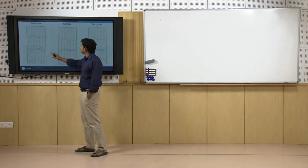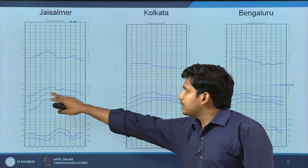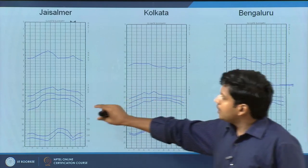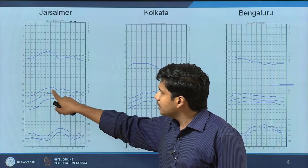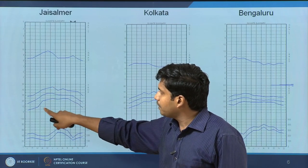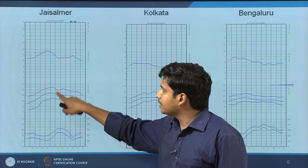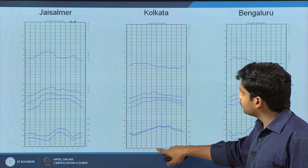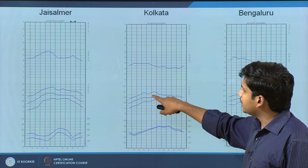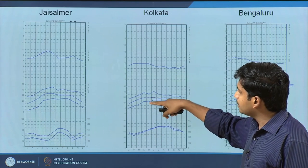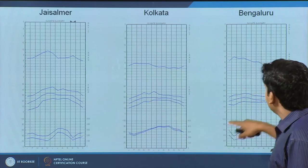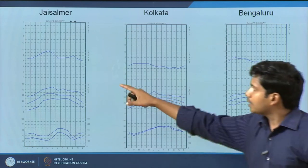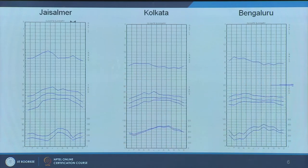For example, if you want to compare Jaisalmer with Kolkata, we can see the temperature maxima versus minima and how much is the diurnal variation. For example, if we take the month of June, the diurnal variation in Jaisalmer is somewhere between 45 and the minimum goes to 25 degrees — so a 20-degree diurnal variation is seen. Whereas in the case of Kolkata in the same month, it goes up to around 37–38 degrees, with a minimum somewhere around 24. Relatively, in Bangalore the diurnal variations are even lower. Similarly, we can compare the irradiance, relative humidity, and solar radiation.